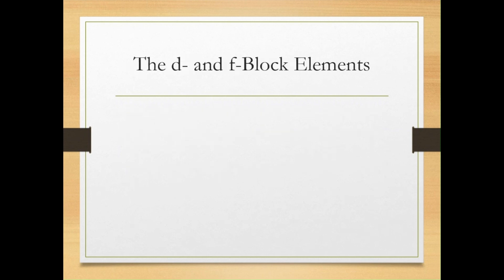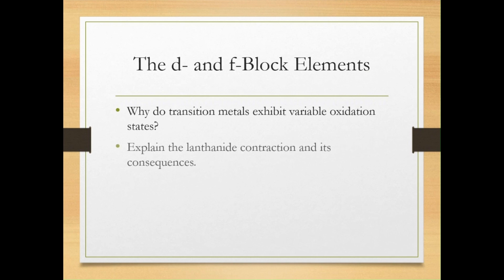Then the D and F block elements: important questions about why transition metals exhibit variable oxidation states. Then explain lanthanide contraction and its consequences. We have also discussed the magnetic properties of D block elements.